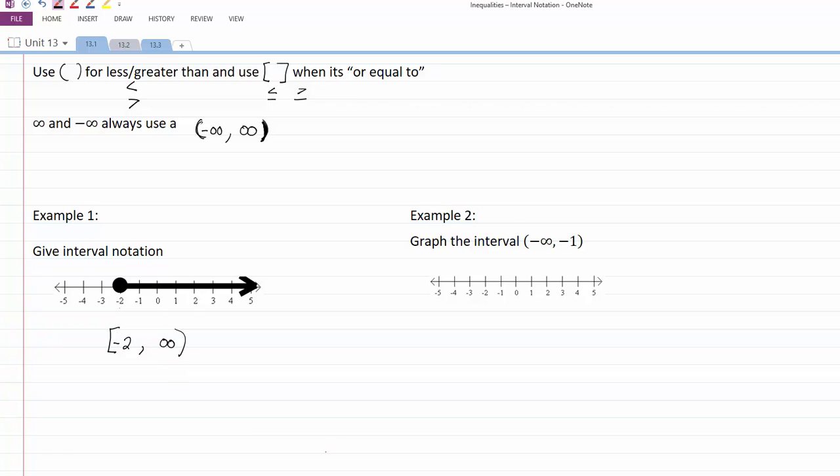In our second example, we graph the interval from negative infinity to negative one. We start with negative one. It has the parenthesis, so we have an open dot at negative one. Then we go to negative infinity, which is over here on the left. We draw our line all the way to the very edge of our graph.